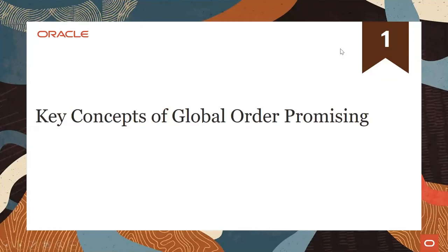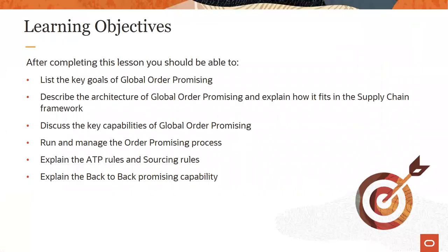Hello and welcome to this lesson on the key concepts of Global Order Promising or GOP. In this lesson, we'll list some of the key goals of Global Order Promising, describe its architecture and how it fits in the supply chain framework, talk through key capabilities, see how to run and manage the Order Promising process, explain key concepts such as ATP rules and sourcing rules, and explain the back-to-back promising capability.